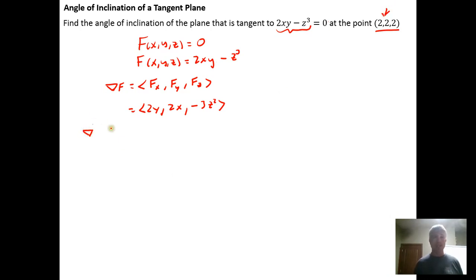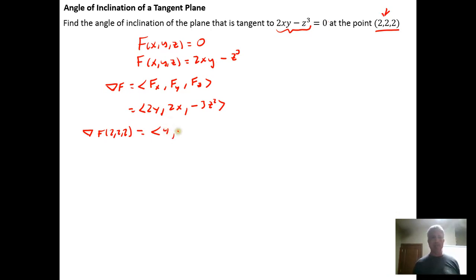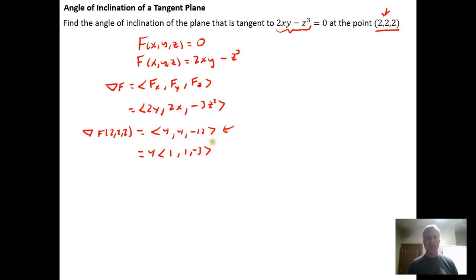We need to evaluate the gradient at the specific point (2, 2, 2). Because 2 appears in each component, something will factor out. We get 2 times y = 4, 2 times x = 4, and negative 3 times 4 = negative 12. Factoring out 4, we get the vector (1, 1, -3). So it's sufficient to find the angle of inclination that this smaller parallel vector makes with the z-axis.